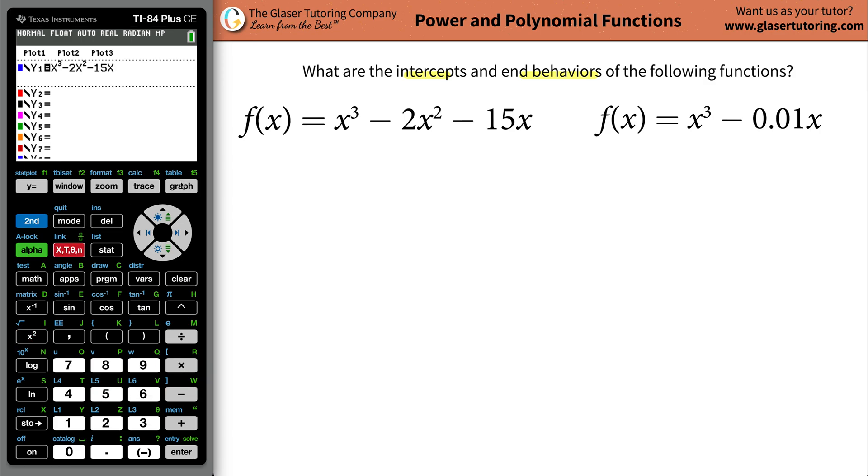Now hit graph. And we get a nice little output here. And it looks like we could zoom out just a touch, because it looks like the graph comes up, and then it's going to curve up here somewhere, comes down, going to curve. So maybe let's zoom out.